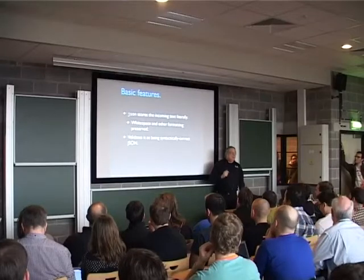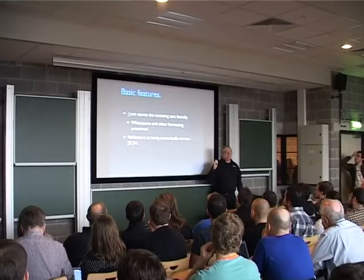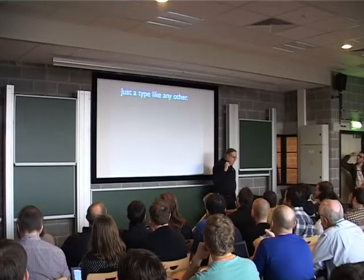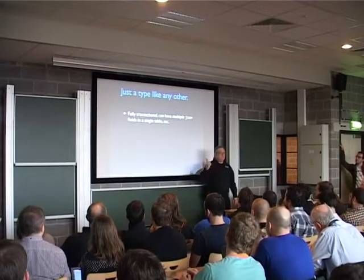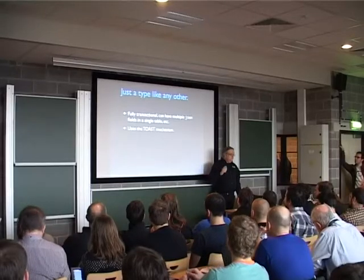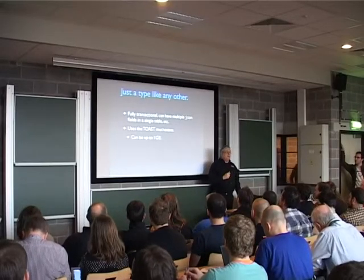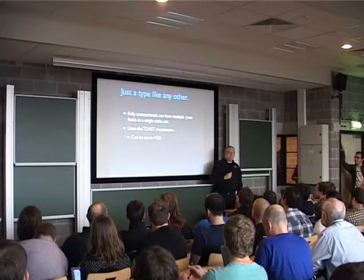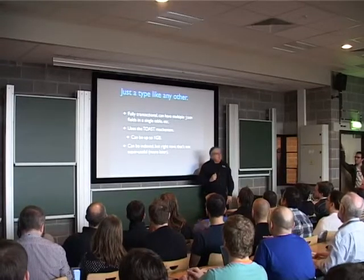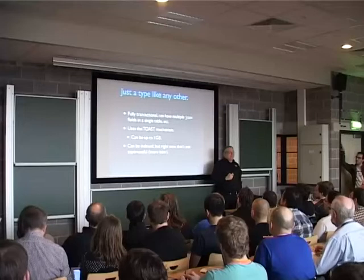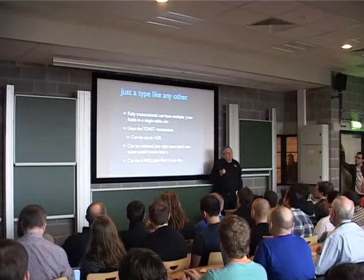It validates it as being syntactically correct JSON. Of course, as we noted, there's a very large difference between syntactically and semantically interesting JSON. It's just a type in Postgres's type system. It's fully transactional. You can have multiple JSON fields in a single table. It uses the toast mechanism, which we will talk about more extensively later. It can be up to a gigabyte. It can be indexed, though right now indexing a JSON field is kind of boring — but more good stuff is coming. And it can be nullable if you want, like any field.